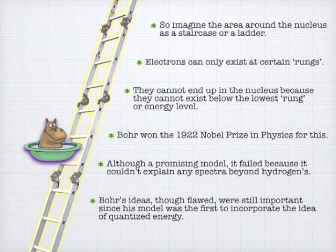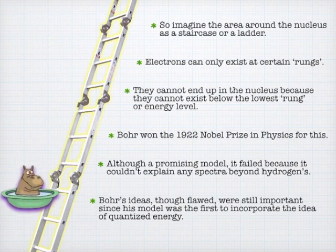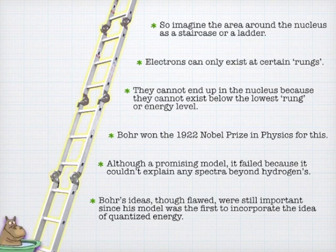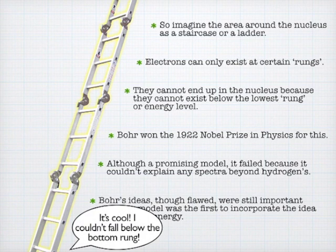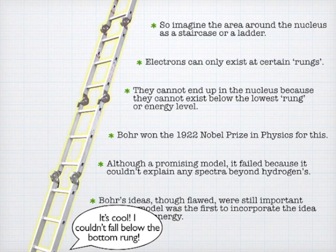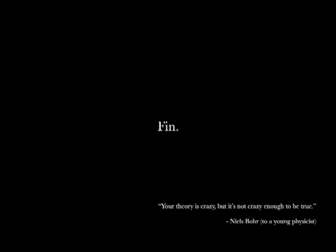Niels Bohr did not like the Nazis at all and was tipped off when the Nazis were going to come after him in Denmark. He fled to Sweden and then worked his way over to England and worked there for a bit, also spending some time with the atomic project. Niels Bohr really was one of those gigantic scientific figures, and he struggled with the ramifications of modern atomic theory like many other people.